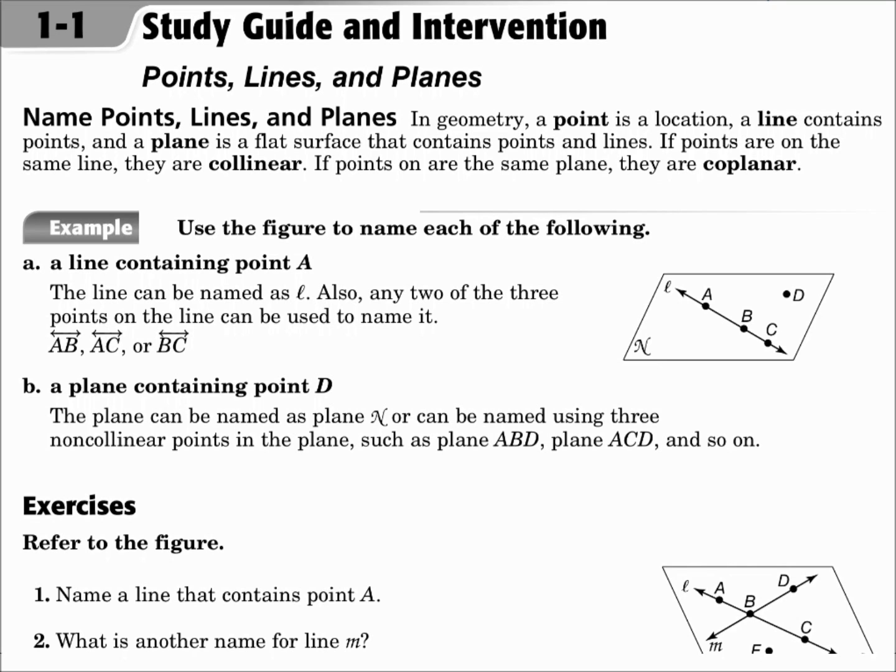If points are on the same line, they are collinear, and if points are on the same plane, they are coplanar.